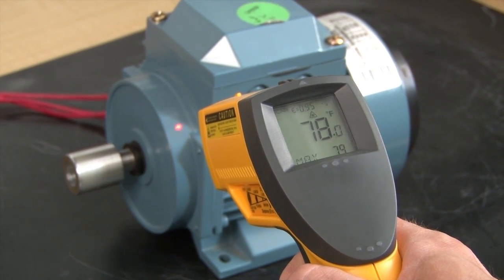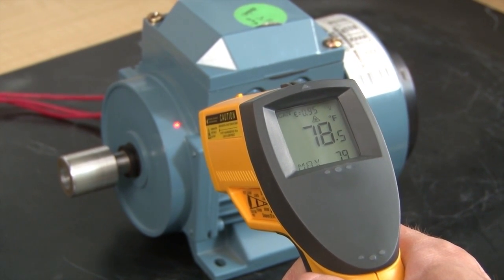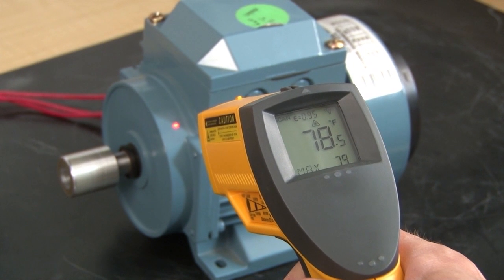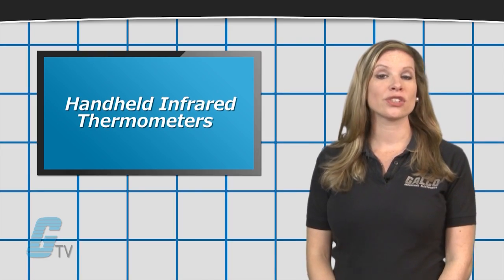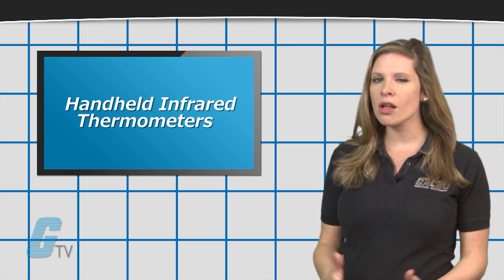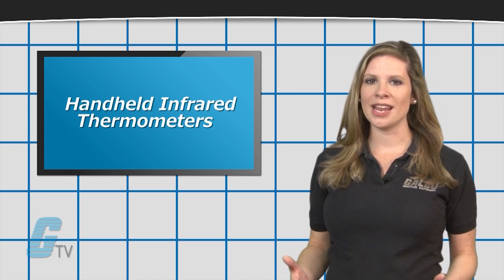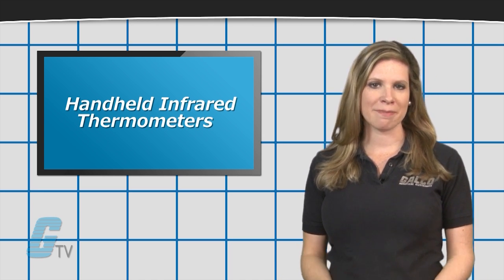The non-contact nature of IR thermometers allows you to take measurements without actually touching the product being measured. This allows for additional safety for the worker while also limiting possible contamination to the product.